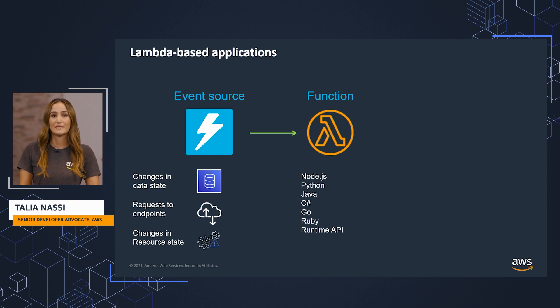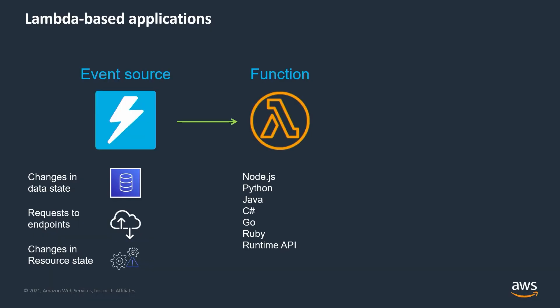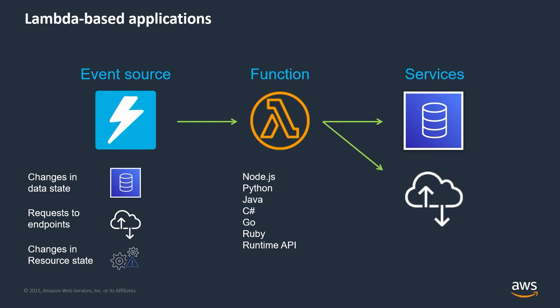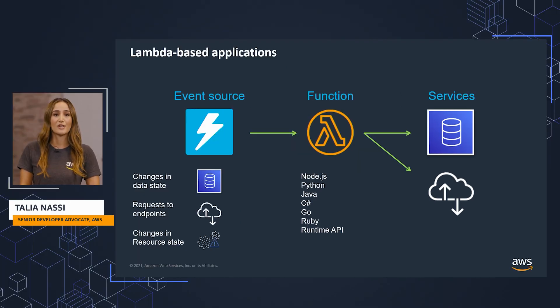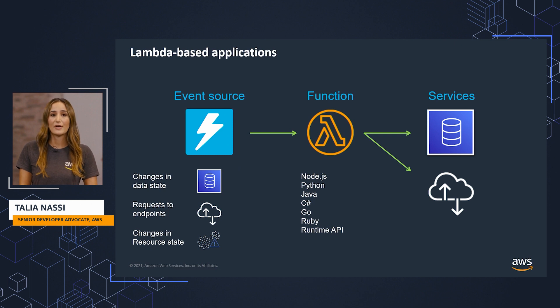An event is something that happened. Maybe a file was uploaded to S3, maybe a DynamoDB table was updated, maybe something was added to an SQS queue, maybe a request hit an API endpoint. An event source is what triggers a Lambda function and makes it come to life. Then we have the destination, which answers the question: what do you want this Lambda function to do once it's invoked? After the function is invoked, it's going to perform whatever it needs to do — update a database record, return something to a client, talk to another API or endpoint, or send its output to another service. These services can be other AWS services or third parties integrated with AWS.